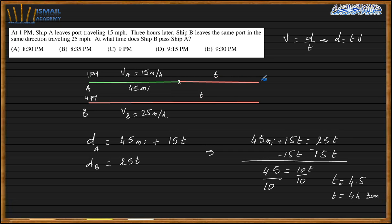So ship B will catch ship A after four and a half hours. That is when ship B will pass ship A.